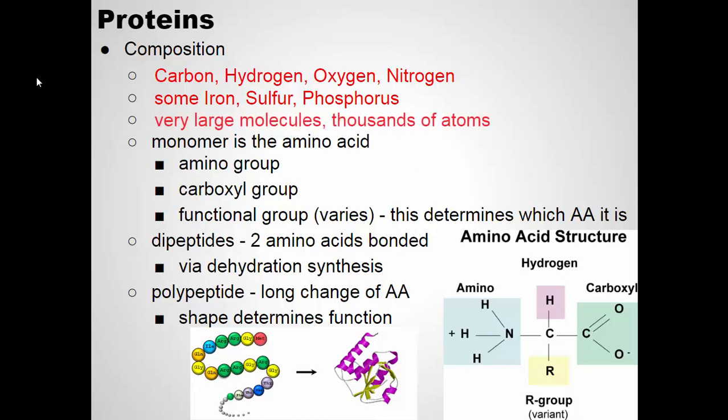Proteins are very, very large molecules — thousands and thousands of atoms make up a protein. They have a very complex shape with spirals and ridges and folding, a three-dimensional shape. A protein is a polymer, made of smaller subunits. The subunits that make a protein are called amino acids.